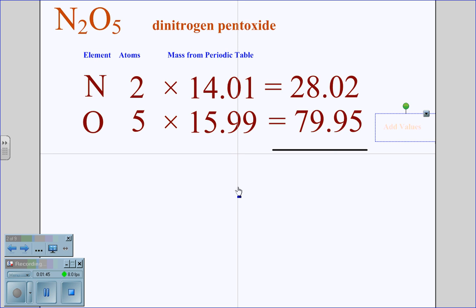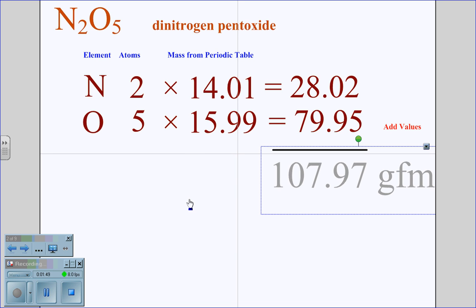Then we are going to add these two values together and get the total mass of the atoms involved in dinitrogen pentoxide. And that is 107.97 for its gram formula mass.